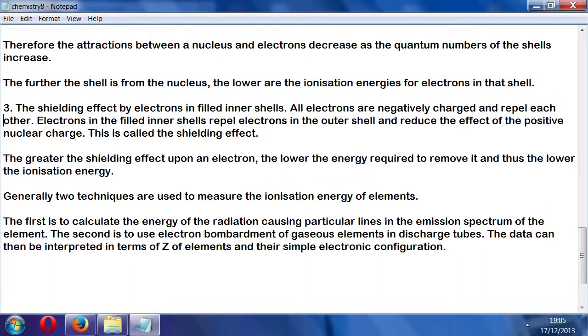There are generally two techniques used to measure the ionization energy of elements. The first is measuring the energy and radiation causing particular lines in the emission spectrum of the element, probably through spectroscopy. The second is to use electron bombardment of gaseous elements in discharge tubes. The data can then be interpreted in terms of atomic number of elements and the simple electronic configuration, including orbitals, which is coming up very soon.